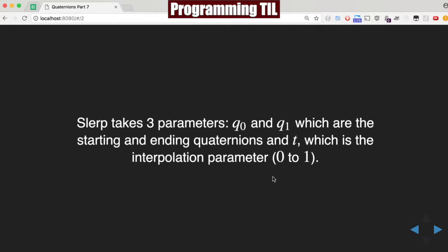So it's going to take three parameters: q0 and q1, which are the starting and ending quaternions, and t, which is the interpolation parameter between 0 and 1.